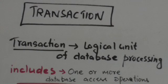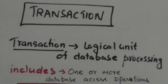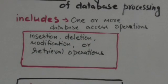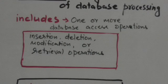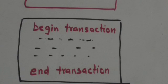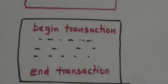Welcome back. In this tutorial we will study about transactions. A transaction is an executing program that forms a logical unit of database processing. A transaction includes one or more database access operations like insertion, deletion, modification, or retrieval operations. A single application program may contain one or more transactions.